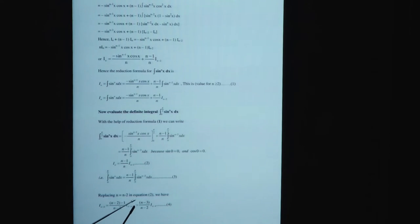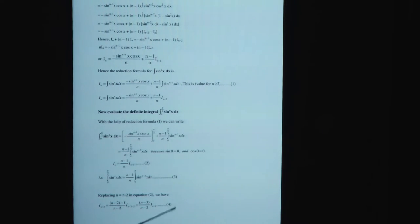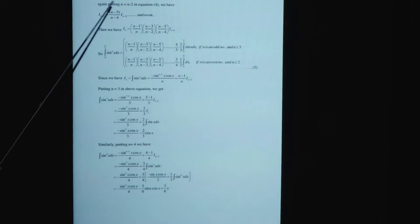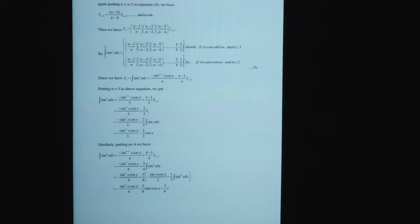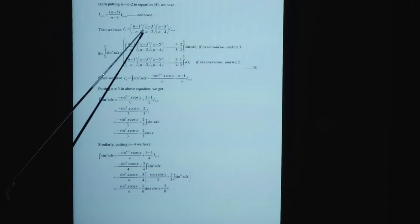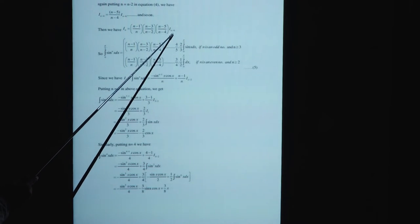Replacing n with n-2 in equation 2: I_(n-2) = (n-3)/(n-2) times I_(n-4). That is equation 4. Again putting n-2 in place of n in equation 4: I_(n-4) = (n-5)/(n-4) times I_(n-6), and so on. Then we have: I_n = (n-1)/n times (n-3)/(n-2) times (n-5)/(n-4) times I_(n-6), and so on.